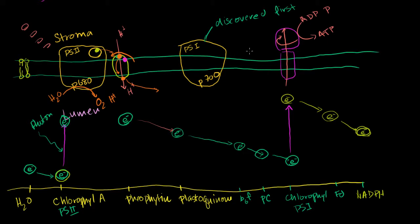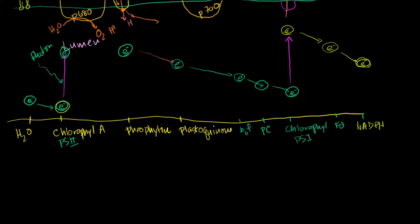NADP+ is the final acceptor, and it becomes NADPH. You can imagine it accepts a hydrogen proton from out here, accepts the electron from this electron transport chain in photosynthesis, and becomes NADPH. And then that NADPH travels in the stroma, which is where the dark reactions occur that actually produce the carbohydrate.